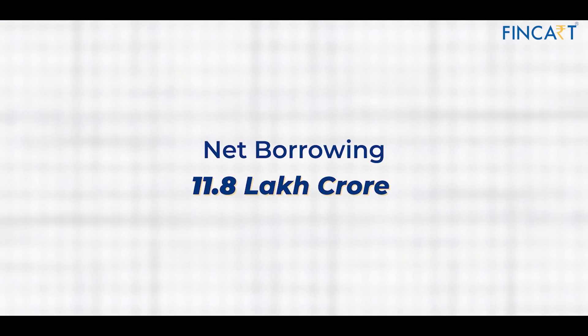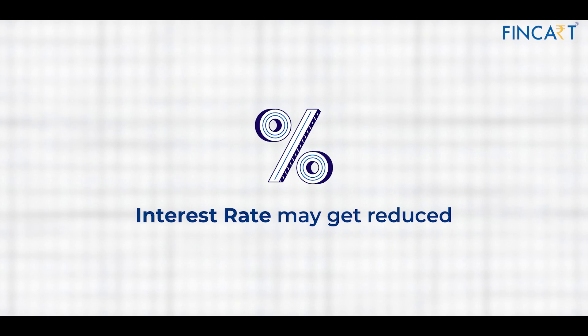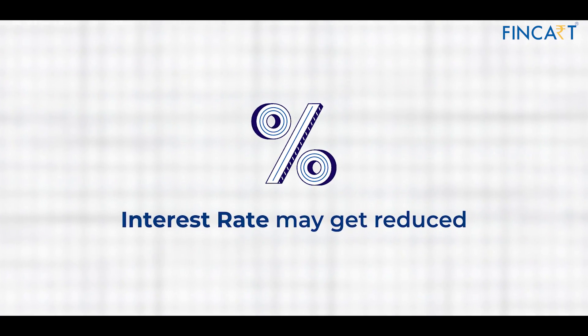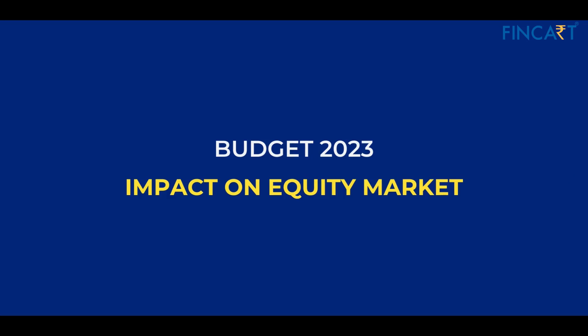Coming to the impact on the bond market: the net borrowing by the government is about 11.8 lakh crores, with investment amount at 3.8 lakh crores — making the net borrowing 11.8 lakh crores, which is a positive move for the bond market. Looking forward over the next six to nine months, and perhaps into 2024, interest rate cuts can start and India will lead because India's situation is better than the global situation.